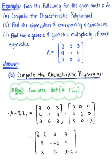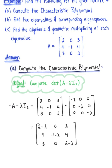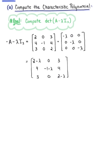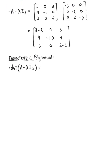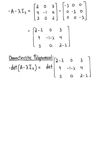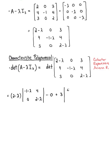Now that we have this matrix, we are ready to find the characteristic polynomial by taking the determinant. We have the determinant of this 3 by 3 matrix, and I'm going to do a cofactor expansion across the first row. This gives us (2-lambda) multiplied by the determinant of [[-1-lambda, 4], [0, 2-lambda]], plus 0, plus 3 multiplied by the determinant of [[4, -1-lambda], [3, 0]].